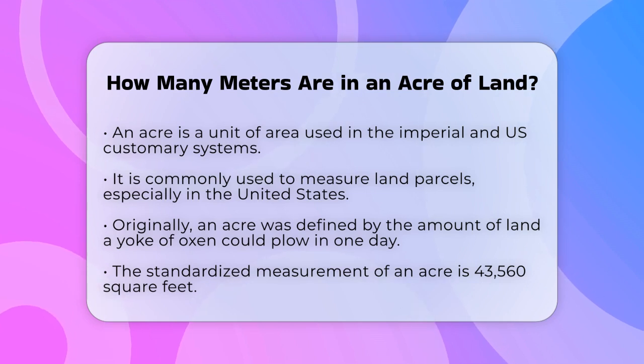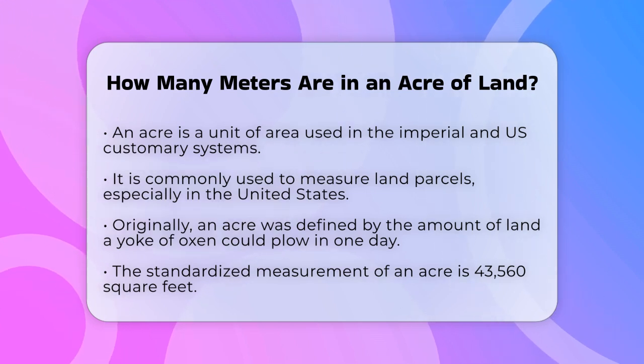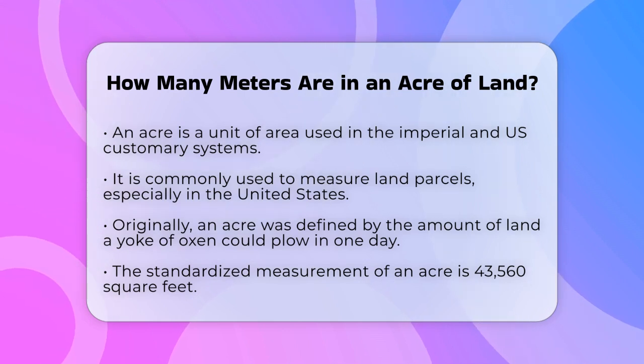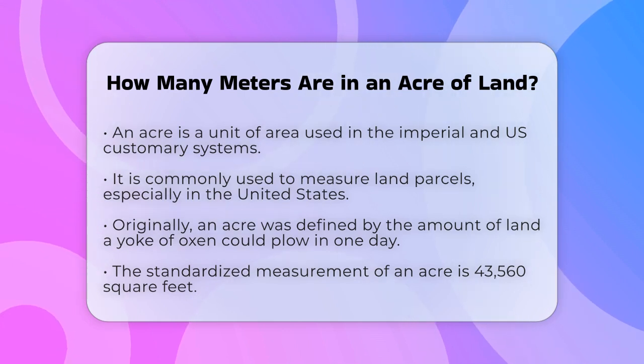Originally, an acre was defined as the amount of land a yoke of oxen could plow in one day, but now it's standardized to 43,560 square feet.